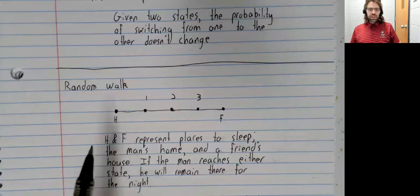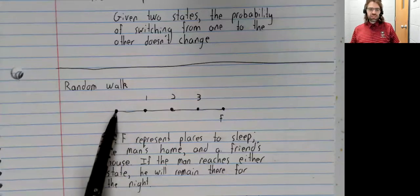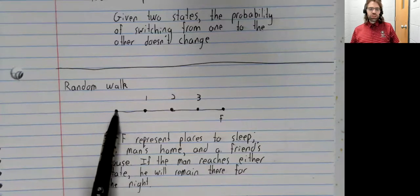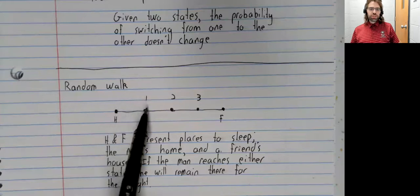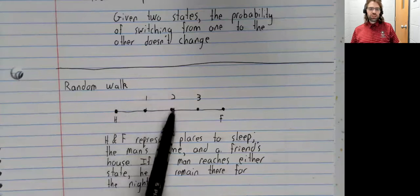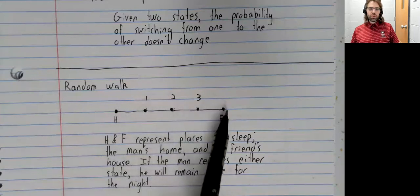We've got finitely many states. We're periodically switching between states. And our transition probabilities are fixed. So say that the man is in this state. What's the probability of transitioning into H, into 1, into 2, 3, or F?